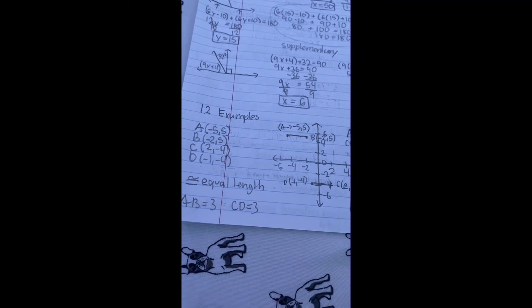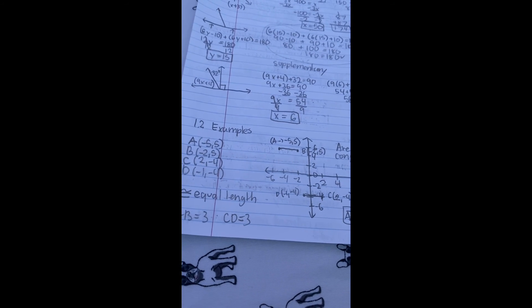1.2 examples. A is negative 5, 5. B is negative 2, 5. C is 2, negative 4. D is negative 1, negative 4. Are they congruent? They are congruent because they have the equal length.